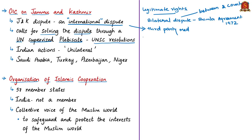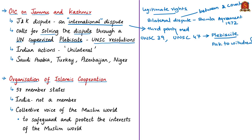Relevant UN Security Council resolutions include UNSC Resolution 47, which mandated a mechanism to ensure a democratic, free and impartial plebiscite in the then state of Jammu and Kashmir. However, it also asked Pakistan to withdraw the tribesmen and Pakistani nationals who entered Jammu and Kashmir for fighting in 1947–48. Till now such a plebiscite has not been conducted, mainly because Pakistan has not withdrawn those tribesmen.